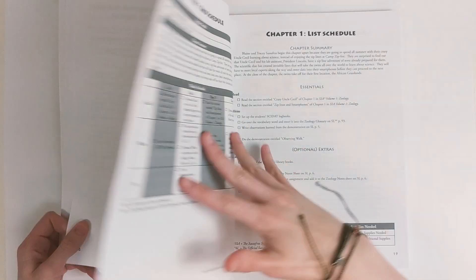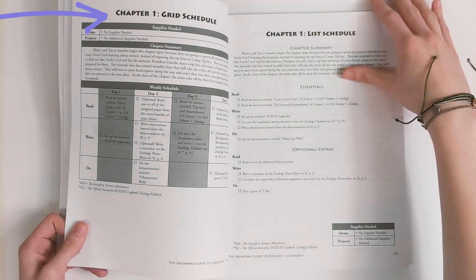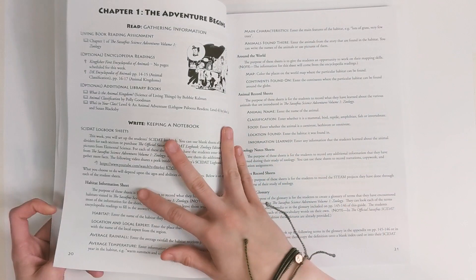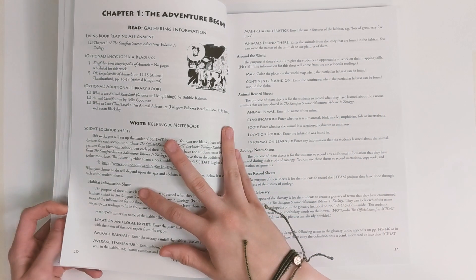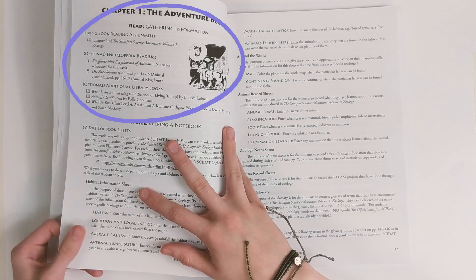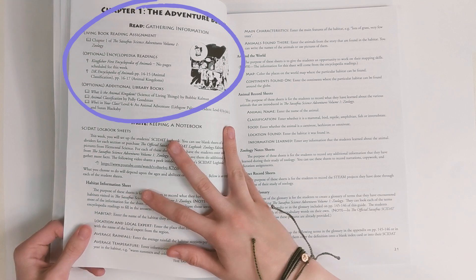First, you'll find two scheduling options: a grid-style schedule and a list-style schedule. After this, you'll find the teacher materials, which include your reading assignments. Know what to read in the novel and get optional additional encyclopedia pages and library books that you can check out.